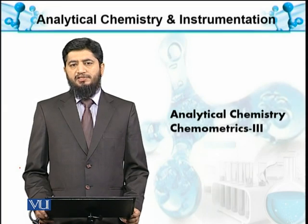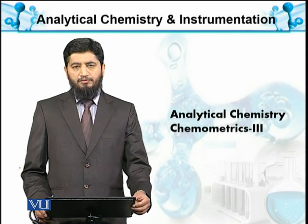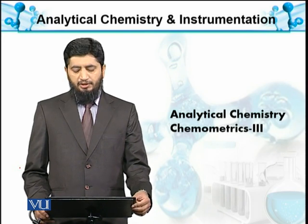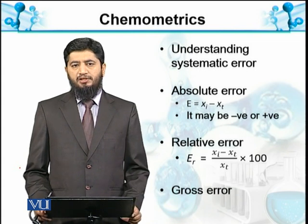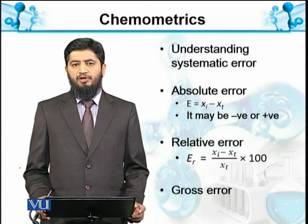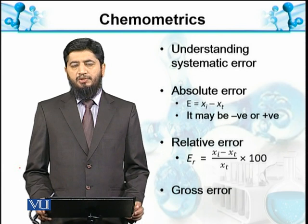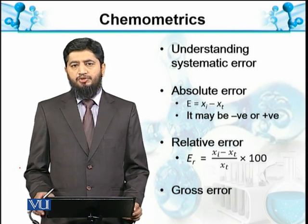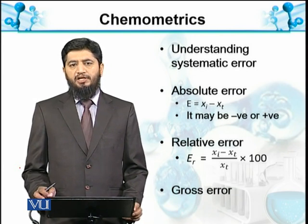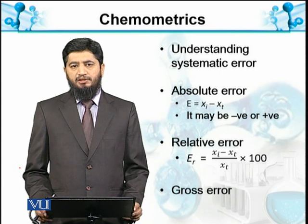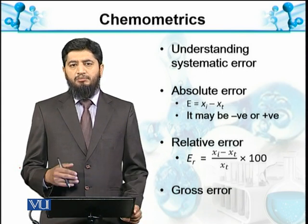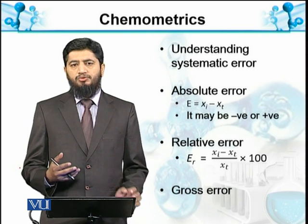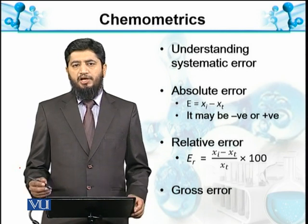In these slides, we will discuss about systematic error and develop an understanding about systematic errors. As we have discussed earlier, systematic errors means positive or negative errors. Systematic error can be determined in any measurement, which is why we call them determinate errors. Those errors that we can't determine exactly, but we call a mean point of plus minus two sides, we call random errors.